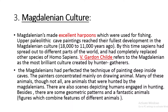By this time, Homo sapiens had spread to different parts of the world and had completely replaced other species. V. Gordon Childe refers to the Magdalenian as the most brilliant culture created by hunter-gatherers. The Magdalenians perfected techniques of painting deep inside caves, concentrating mainly on animals — many of which were hunted. There are also scenes of humans engaged in hunting, geometric patterns, and fantastic imaginary animal figures combining features of different animals.